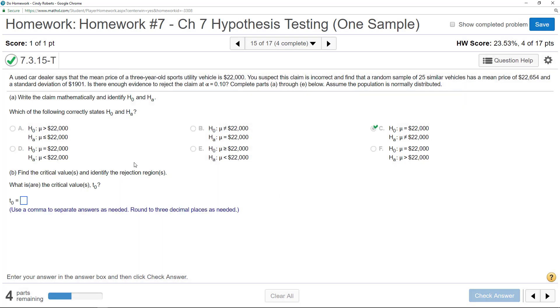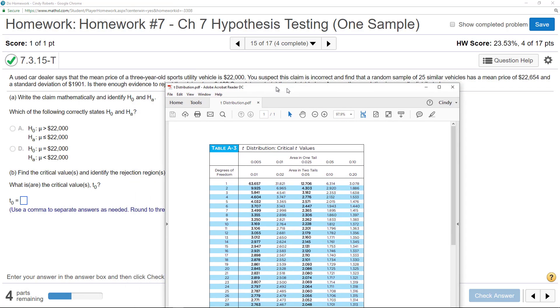Find the critical values. Notice it's telling you it's a T. How do you know it's a T? Because you do not know the population standard deviation. You have a sample standard deviation. So what you have to do is find your T table. Where is your T table?